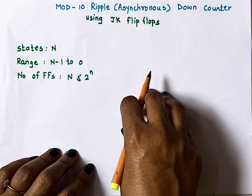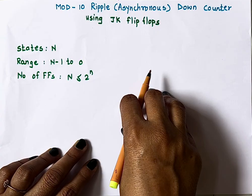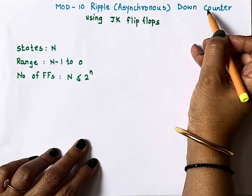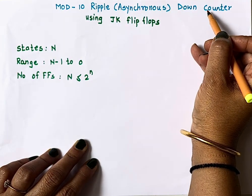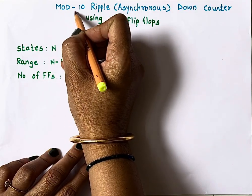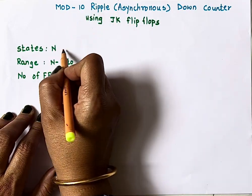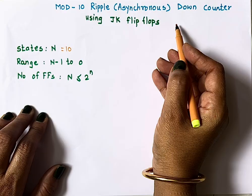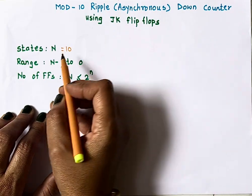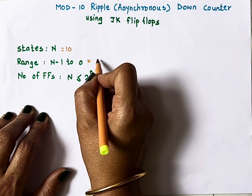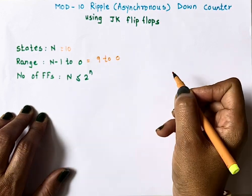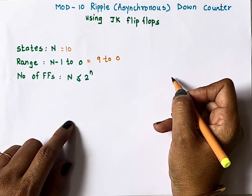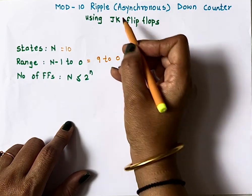Hello everyone, welcome back to my channel. Today we'll talk about the most important topic in digital electronics: the design of a mod 10 ripple down counter. Modulus 10 means it will count 10 clock pulses, so the number of states is 10. Since this is a down counter, it will count in the downward direction from 9 to 0.